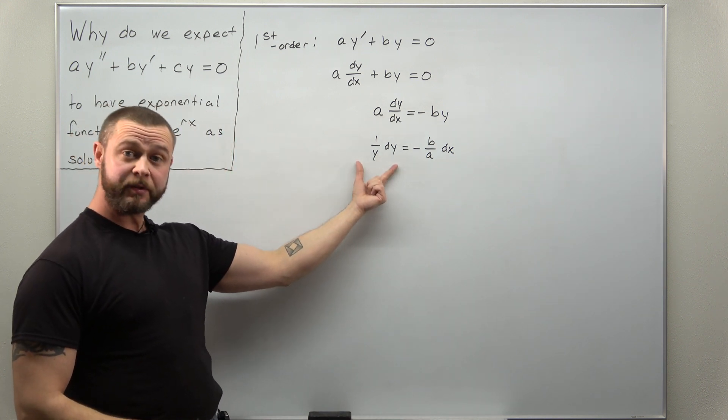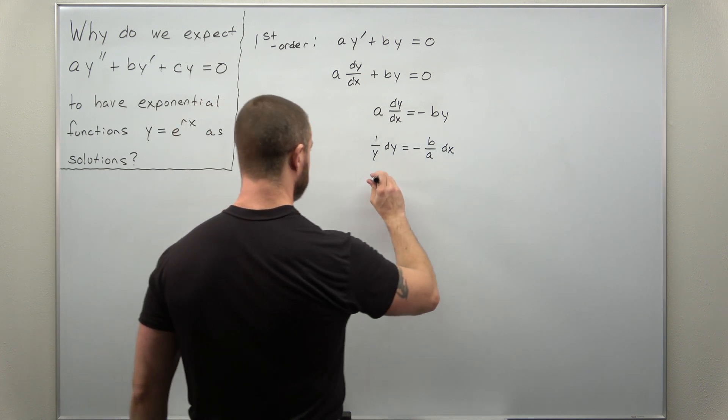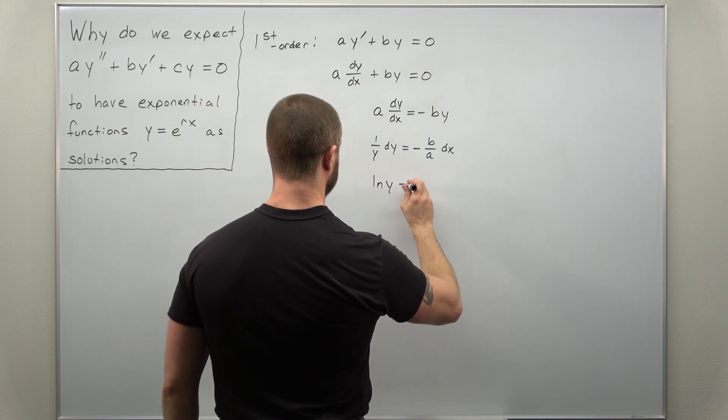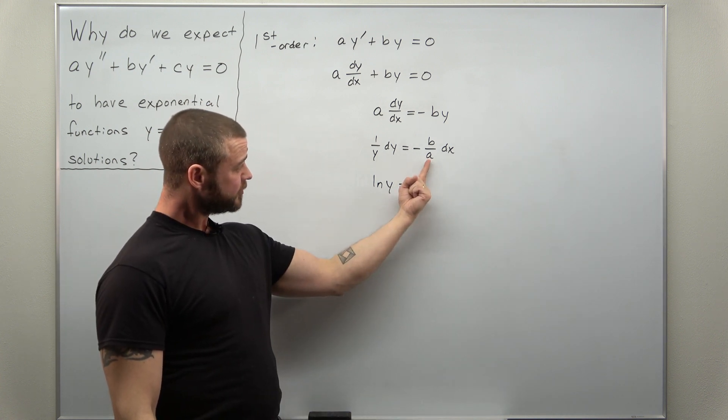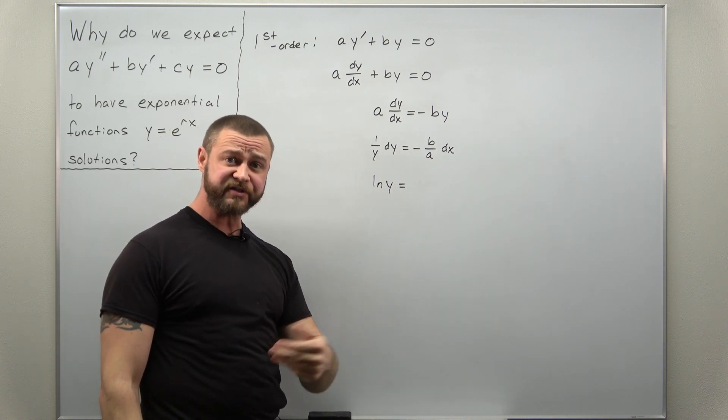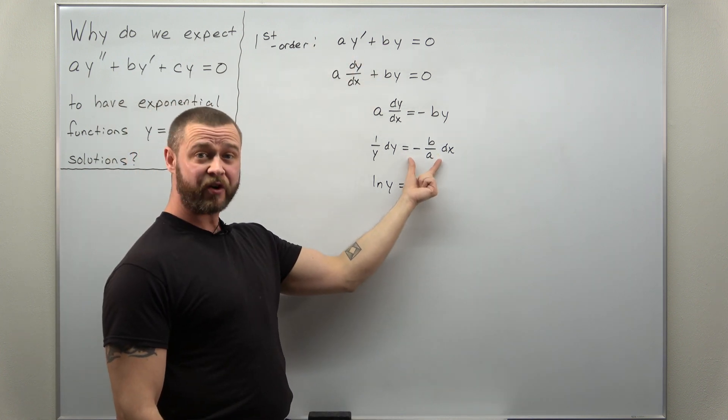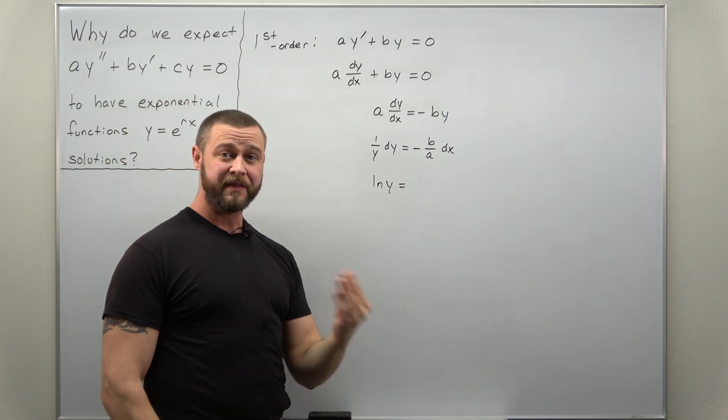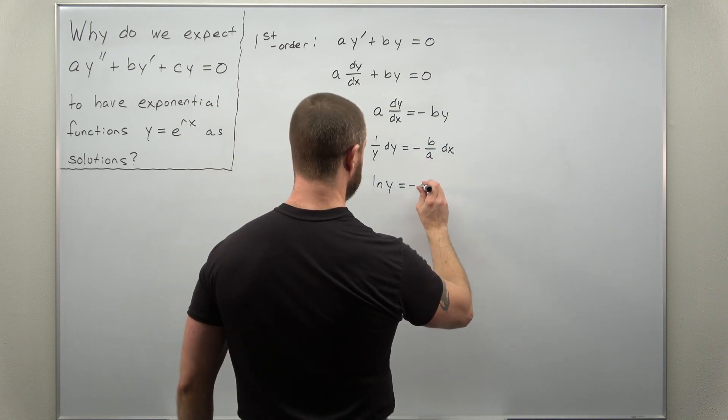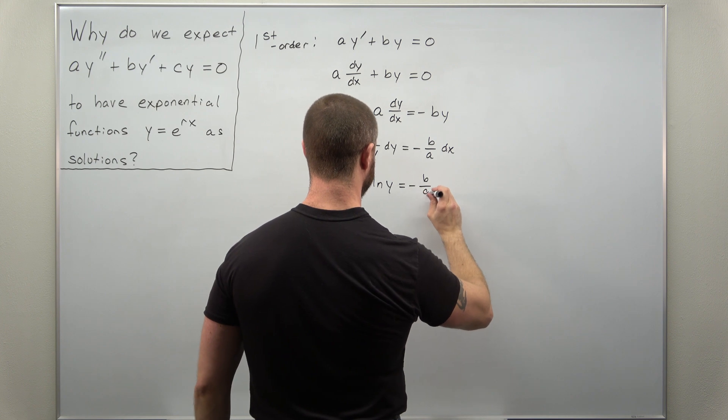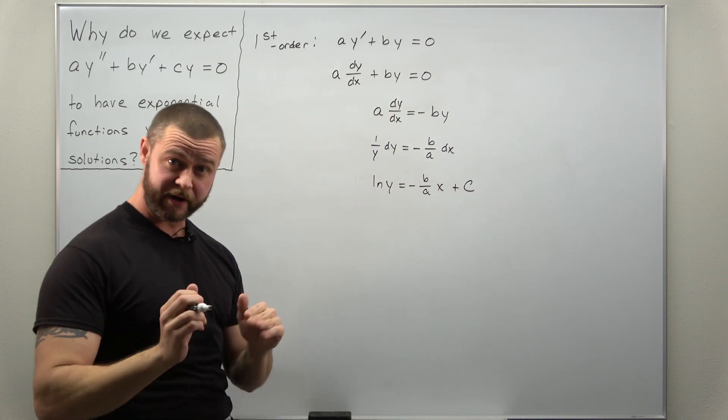The left side should be simple. You'll recognize that as integrating to natural log of y. And the right side is also pretty easy. b and a are constants through your coefficients up here. So here we're just integrating a constant. The antiderivative is the constant times x. We'll get negative b over a times x, and then of course, plus c, your integration constant.